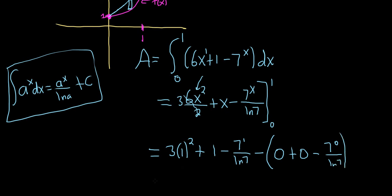Let's keep going as much as we can. This is 3 plus 1, which is 4. So this is where I always mess up. Let's see. Minus 7 over the natural log of 7. Okay, this is a 1. 7 to the 0 is 1. So there's a negative here, so it'll become a plus 1 over ln 7. Okay, we can combine this. This is 4 minus 6 over the natural log of 7. So that should be the final answer.